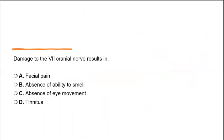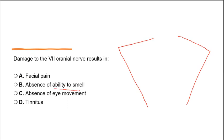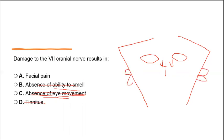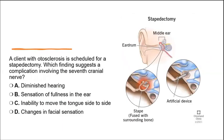NCLEX question: damage to the seventh cranial nerve results in what? The large seven we drew represents the sides of the face — that's the facial nerve. Damage causes facial pain. Absence of smell would be CN 1; absence of eye movement would be CN 3 or 4; tinnitus involves CN 8. So option A — facial pain — is the correct answer.